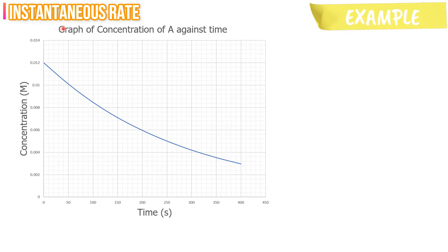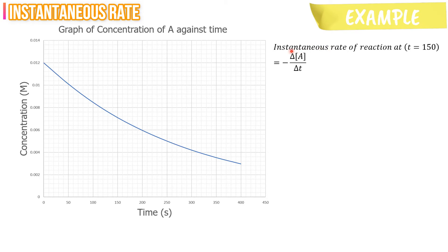Step 1: Write down the formula of instantaneous rate of reaction. As we can see, the formula for instantaneous rate of reaction is equal to negative delta A over delta T.